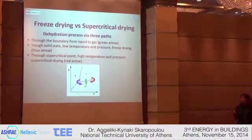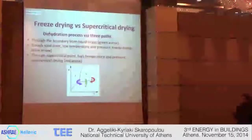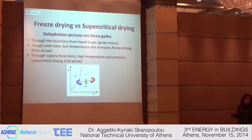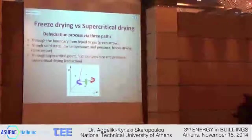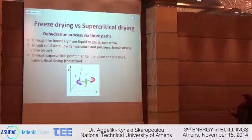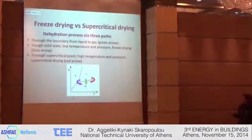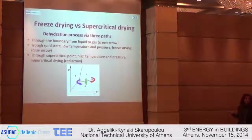There are three paths for the drying process. The first one is through the boundary from liquid to gas — the green arrow. The second is the most common and natural way, the freeze-drying path — the blue arrow. In this case, liquid transitions directly from solid to gas state. And supercritical drying — the red arrow. In this case, liquid transitions to the supercritical fluid state. In the case of freeze drying, we have to apply low temperature and pressure, while in the case of supercritical drying, we have to apply high temperature and high pressure.